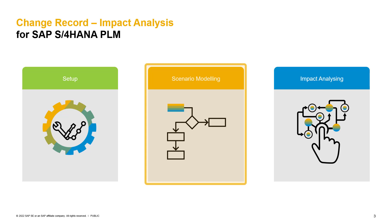The scenario modeling happens in the Fiori app of the impact modeler. In the modeler, you can choose between a graphical and a tabular view. The graphical view displays all object entities maintained in the customizing and is used for simple impact scenarios. The tabular view gives you control over all the different entities available in SAP and can be used for more complex impact analysis scenarios. It is also possible to switch between the graphical and the tabular view.